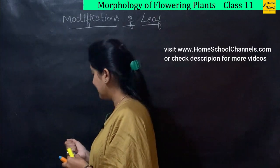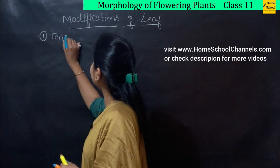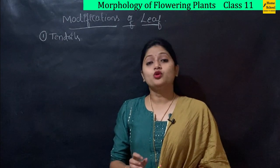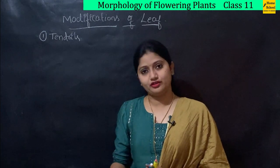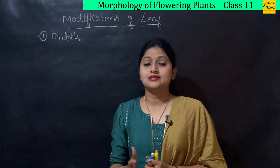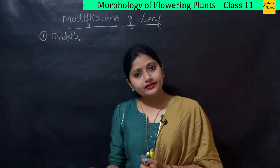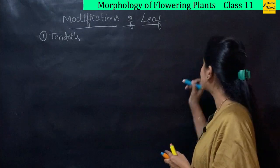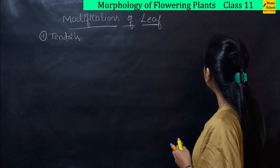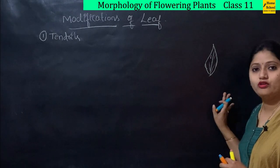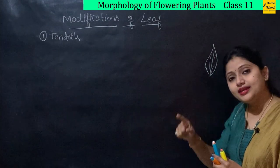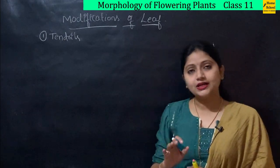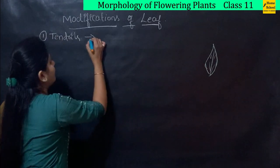The first modification we are going to see in leaves is tendrils. Usually the function of the leaf is to carry out photosynthesis. Apart from photosynthesis, if the leaf is performing any other function, then the leaf has to be modified to carry out those other functions. The first modification is the tendril, which is mainly for climbing purposes.